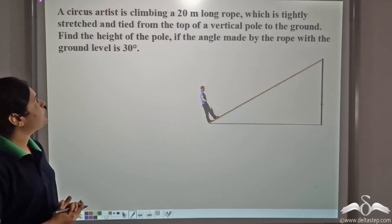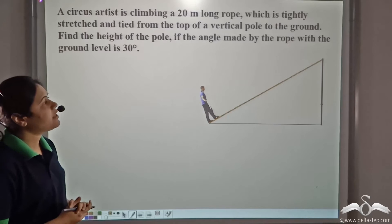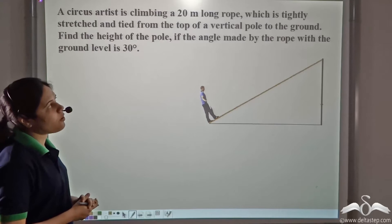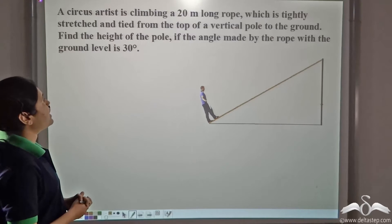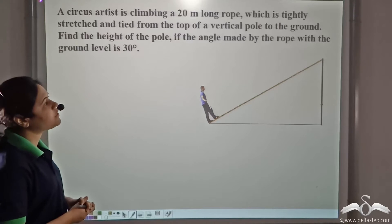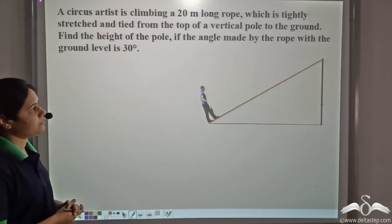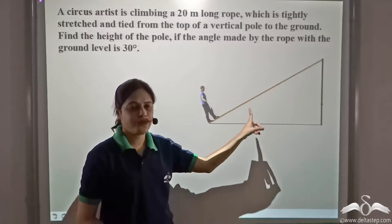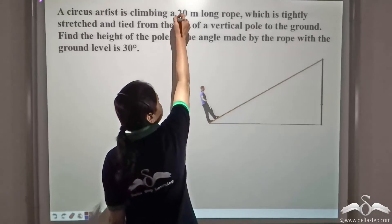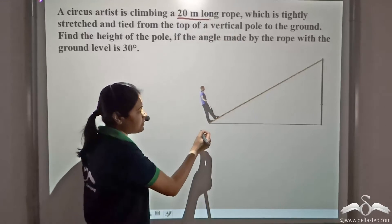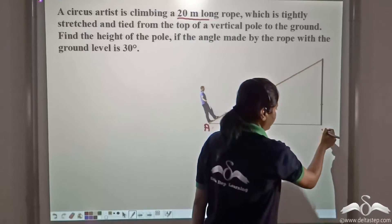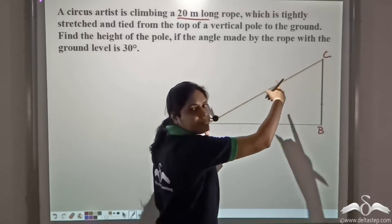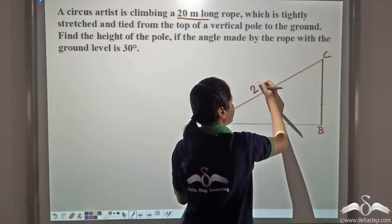We have this problem here. A circus artist is climbing a twenty meter long rope which is tightly stretched and tied from the top of a vertical pole to the ground. Find the height of the pole if the angle made by the rope with the ground level is thirty degrees. If I name the points A, B, C — the length of the rope is AC, and AC is twenty meters.